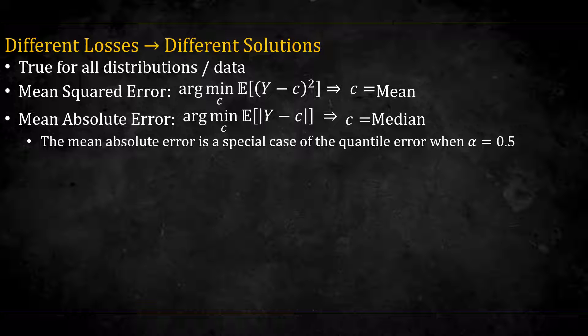As we shall see, this can be considered a special case of the quantile loss when the quantile alpha is equal to 0.5, that is, to the median.